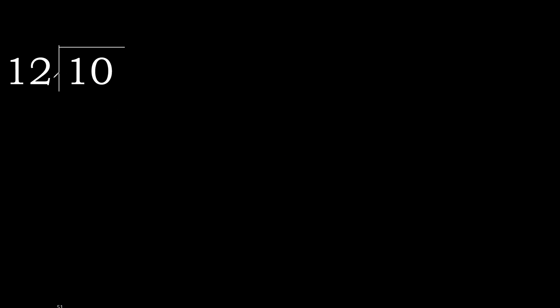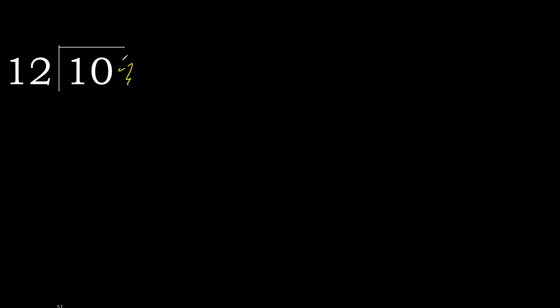10 divided by 12. 1 is less, therefore next. 10 is less, therefore next. That is not a number, therefore complete — always complete with 0 here.